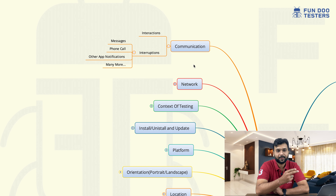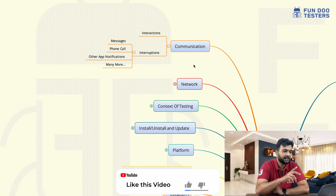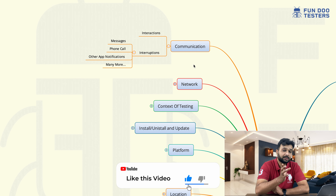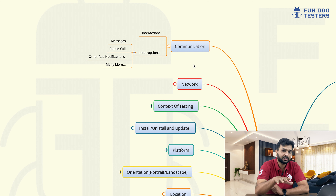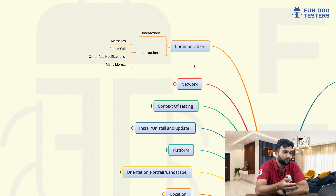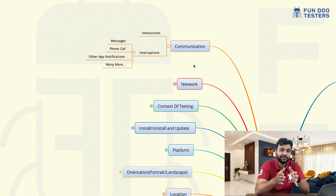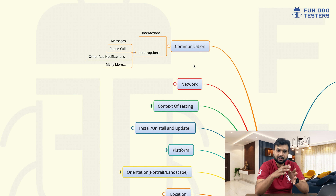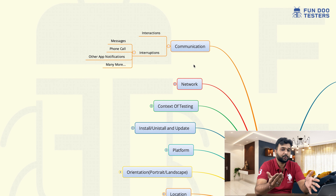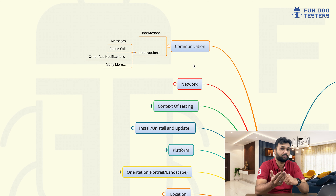Later on, we'll discuss communication. There are two main categories: interaction and interruption. Interruption is whenever we are using any application and we are getting a message, a phone call, some other application notification, an alarm is ringing, or data is going or coming — like when we are switching between multiple networks. This can be a communication or interruption scenario we have to test. For example, I'm using PhonePe and I want to send money to someone — by that time, what if I receive a call from someone? All these scenarios we need to keep in our mind.